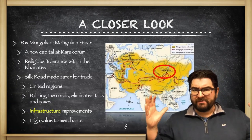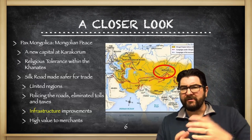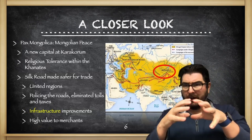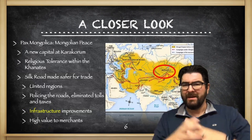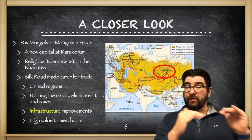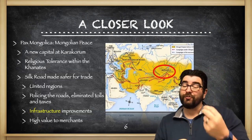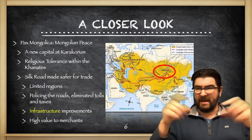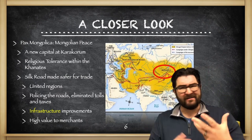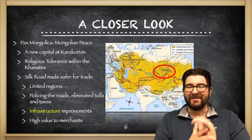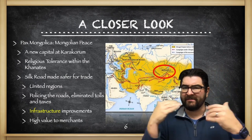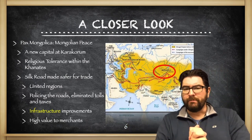Once the Mongols create this massive empire, we'll enter into a period of the late 13th century known as the Pax Mongolica, or Mongolian Peace. The Mongols have a new capital city, and some of them begin to settle down and become more sedentary. There's a tolerance for different religions within the Mongol khanates. The Silk Road will be made safer and more productive for trade as different regions are united now under one rule — the roads will be policed. Tolls and taxes that might have existed at different points along the Silk Road will be eliminated, as the entirety of this trade route will be under Mongol control.